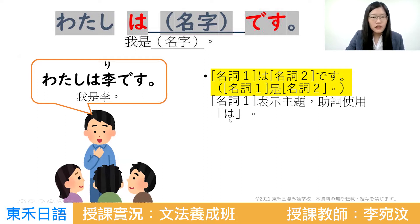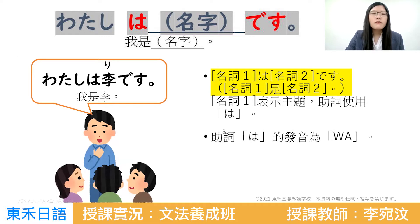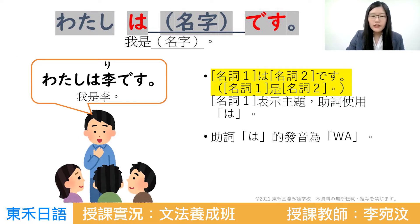顯示主題的助詞使用的是「は」。怎麼念呢？は、です。這一個字，評假名的時候一般來說念は，はひふへほ的は。但它當助詞的時候，發音會改變，變成了「わ」。